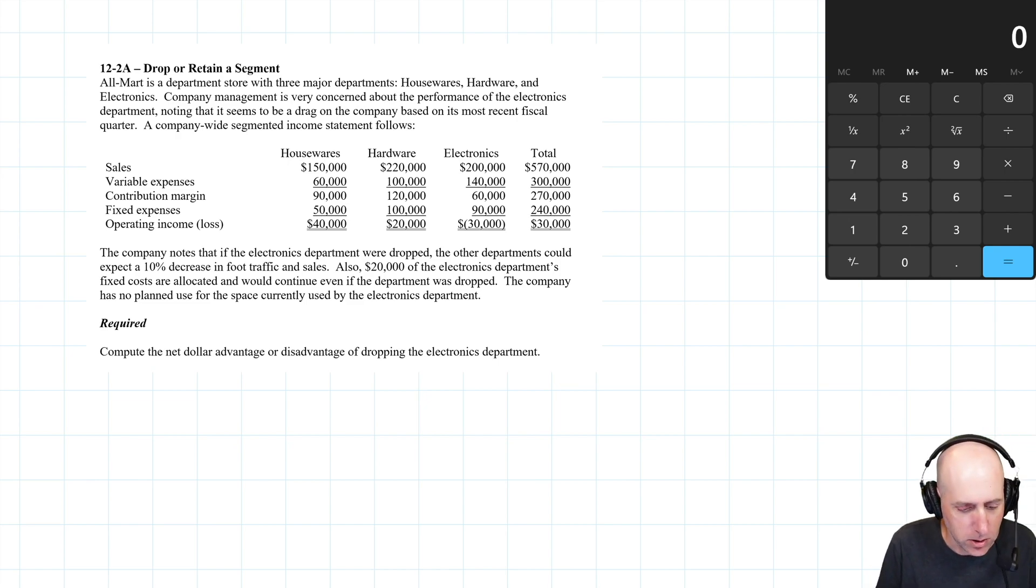Walmart is a department store with three major departments. We're doing 12-2a from my accounting workbook, tonybell.com. The three departments are housewares, hardware, and electronics.